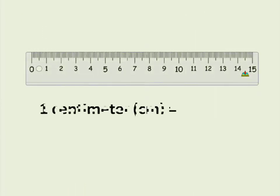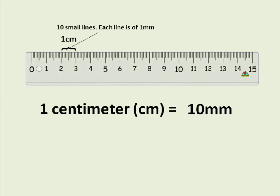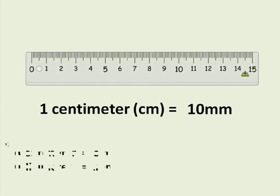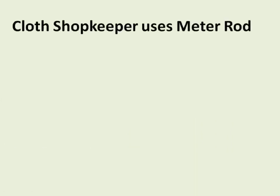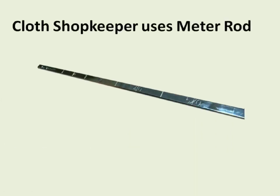You must be wondering what the small lines on the scale are. These are the millimeter lines. One centimeter is ten millimeter, hence ten small lines are there. One centimeter is written as one cm. One millimeter is written as one mm. But we can't use this scale for bigger things — for that we have another measurement.